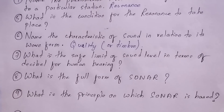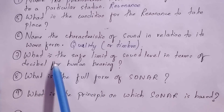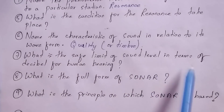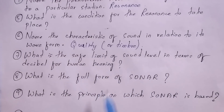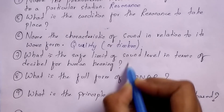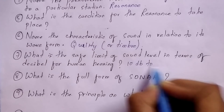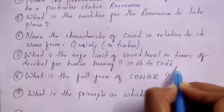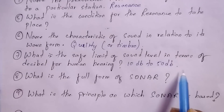Question number seven: what is the safe limit of sound level in decibels for human hearing? The sound that is peaceful to human ears is 10 decibels to 50 decibels. If you go above 60 decibels and beyond, it becomes irritable to the human ears.